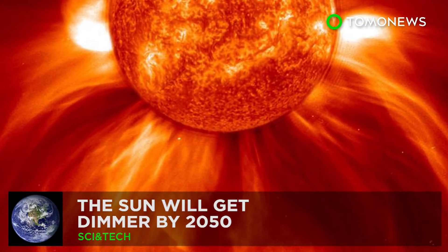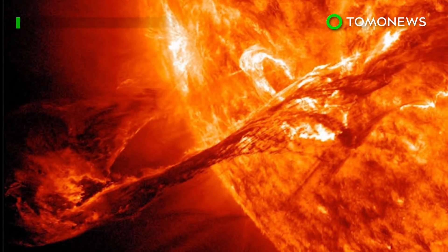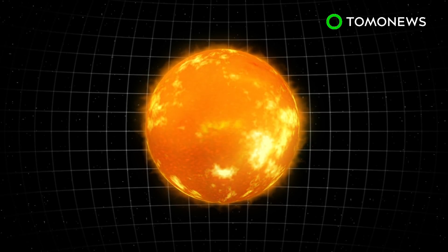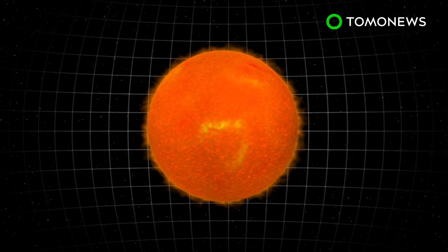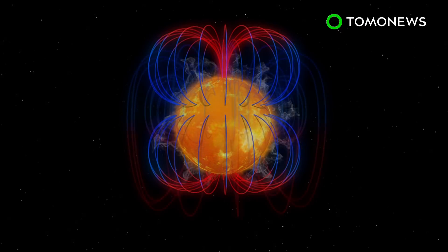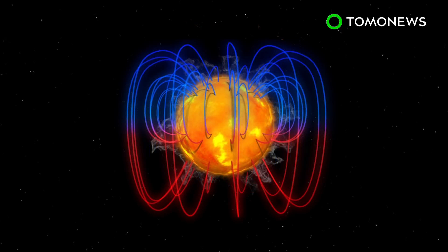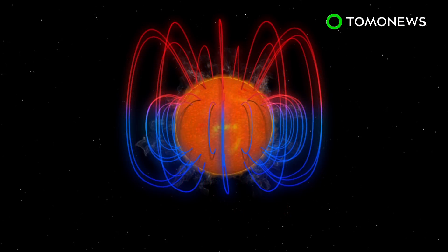The sun will get dimmer by 2050. Who turned the lights out? Scientists are predicting the sun will be dimmer by 2050 in a phenomenon referred to as a grand minimum. The phenomenon comes at irregular intervals and is believed to be triggered by random fluctuations in the sun's magnetic field.